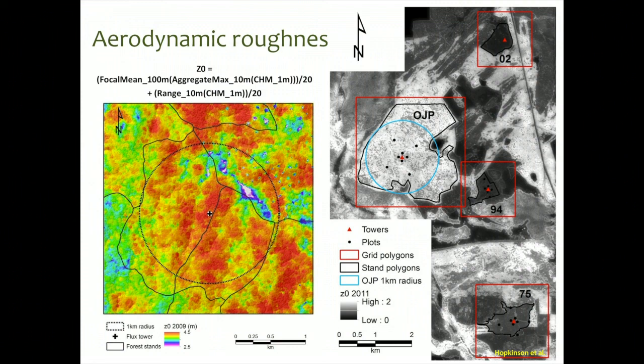That approach is okay if you're right in the middle of a canopy, but it's not adequate at the edges of canopies, forest stands, or any kind of linear feature. We tried to further refine that approach to account for those edge effects. While we haven't yet fully validated this particular model, we have used this approach in footprint models and found that it gives better results — so this is something we're continuing to develop.